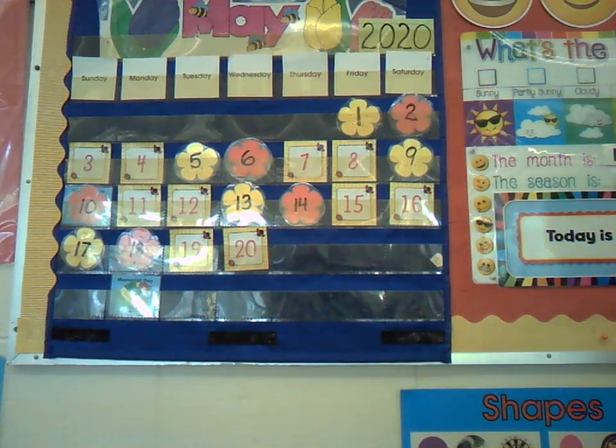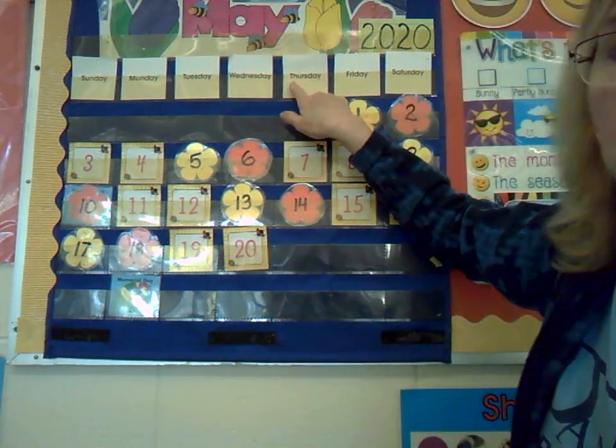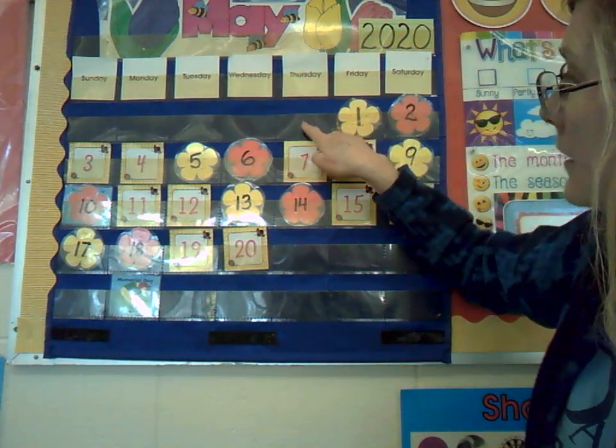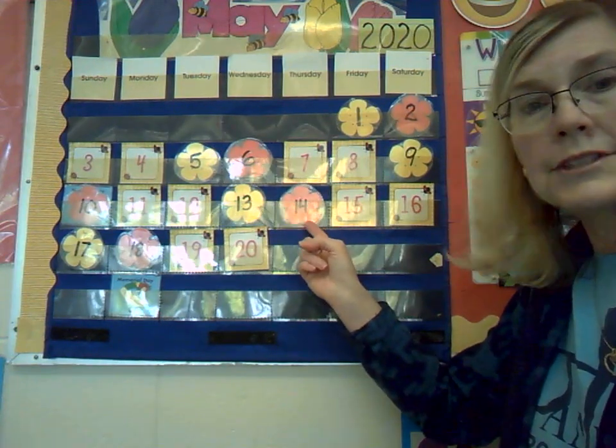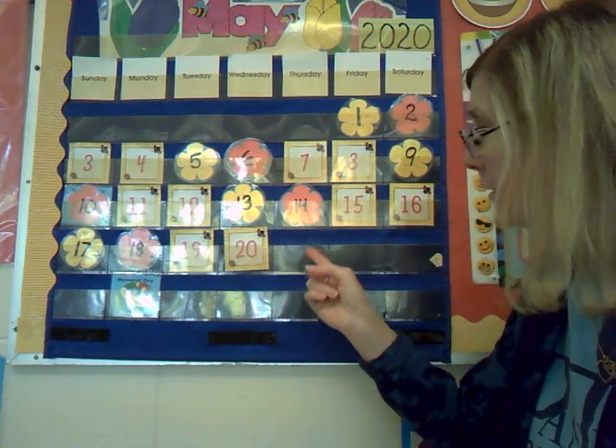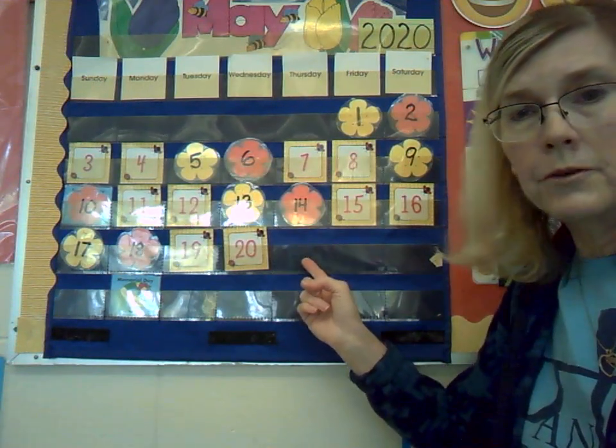Alright, here comes Mrs. Neve. We have established that it is Thursday, so let's follow our Thursday column down. Here it is, our TH for Thursday. The 7th was the first Thursday in May. The 14th was the second Thursday. And today is the third Thursday, so we have to figure out the date. Yesterday was the 20th. What comes after 20 and what picture for our May pattern? If you said 21 on the yellow flower, you are correct.